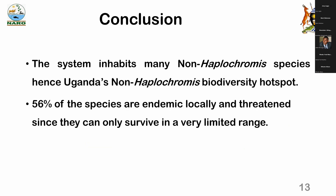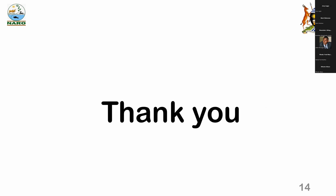To conclude, the system inhabits many non-haplochromis species, making it Uganda's hotspot of non-haplochromis biodiversity. Also, 56 percent of the fish species are endemic locally, and this needs more conservation concern because they can only survive in a limited range. Thank you for your time.